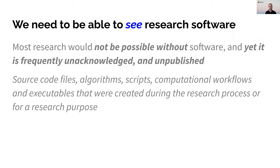When we talk about research software, the kinds of things we're talking about include source code, files, algorithms, scripts, workflows and executables — those that were created during the research process or for an actual research purpose.